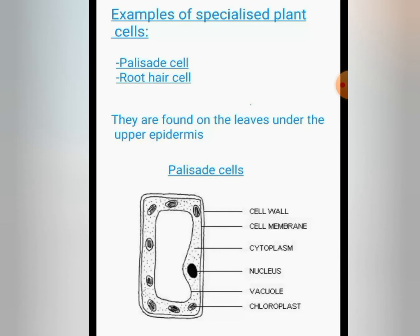So here I have examples of specialized plant cells, and we have two of them: we have the palisade cell, then the root hair cells. These cells are found on the leaves, under the upper epidermis.